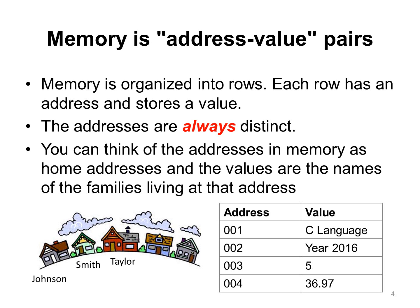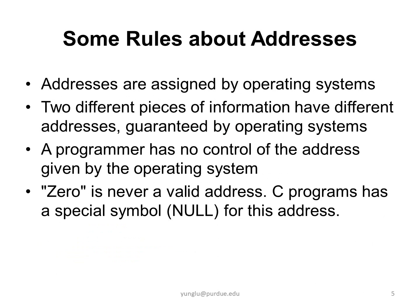Also, the address is never zero. Here are some rules about memory addresses. First, operating systems assign addresses. Moreover, two different pieces of information must reside in two different addresses. This is guaranteed by operating systems.